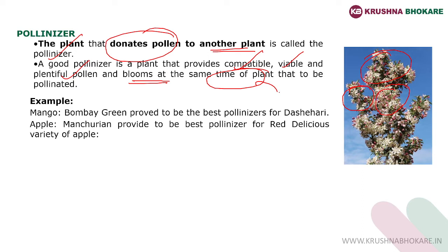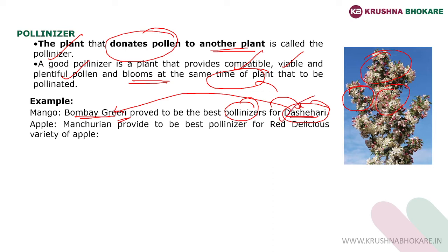The pollinizer variety should bloom — meaning it should have flowers — at the same time as the commercial variety; only then can it be useful. For example, the Bombay Green variety is a good pollinizer for Dashari mango. When Dashari blooms, Bombay Green should also be blooming to provide pollen for fertilization. If Bombay Green doesn't bloom, there may be a negative effect on the fruiting or fruit quality of Dashari. Similarly, the Red Delicious apple variety requires pollen from the Manturian variety, which is a good pollinizer for Red Delicious.